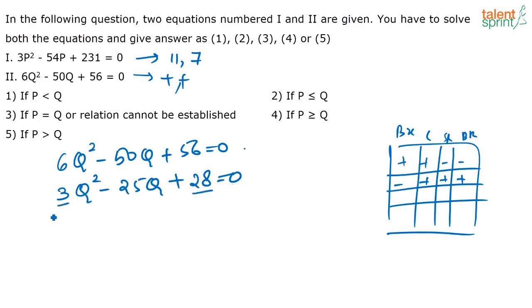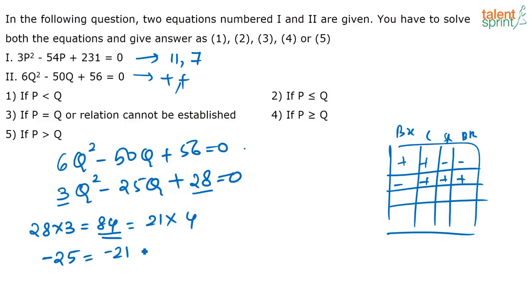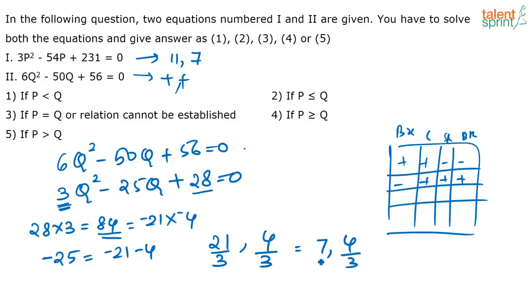For 3q² - 25q + 28 = 0, multiply 28 and 3 to get 84. Find two numbers whose product is 84 and sum is 25: that's 21 and 4, since 21 × 4 = 84 and 21 + 4 = 25. Now divide by a (which is 3): 21 ÷ 3 = 7 and 4 ÷ 3 = 4/3. Both roots are positive, so the roots of the second equation are 7 and 4/3.